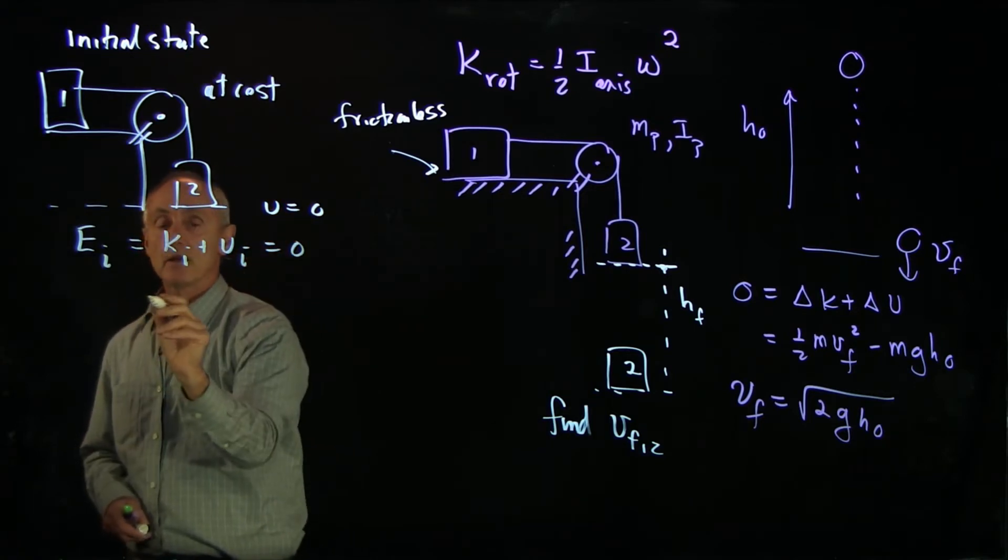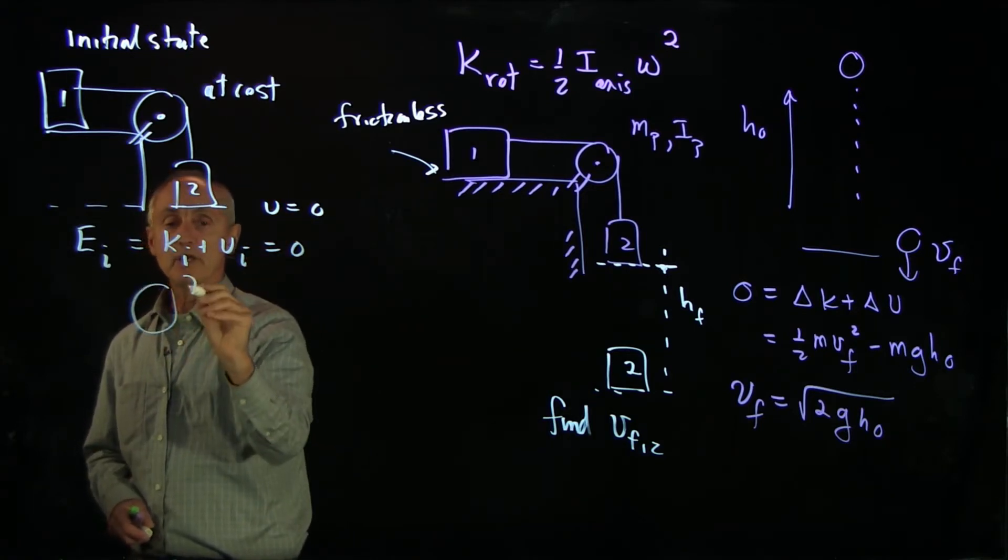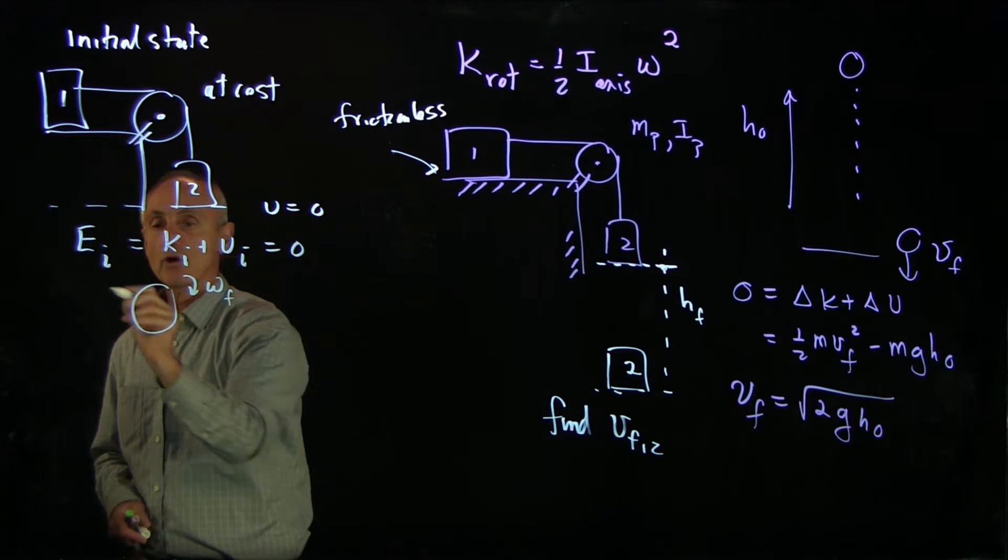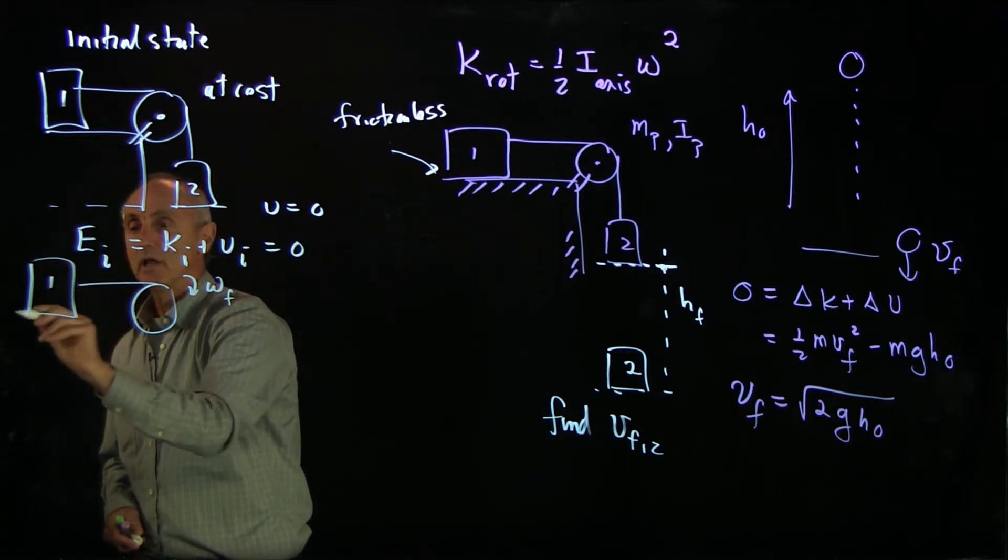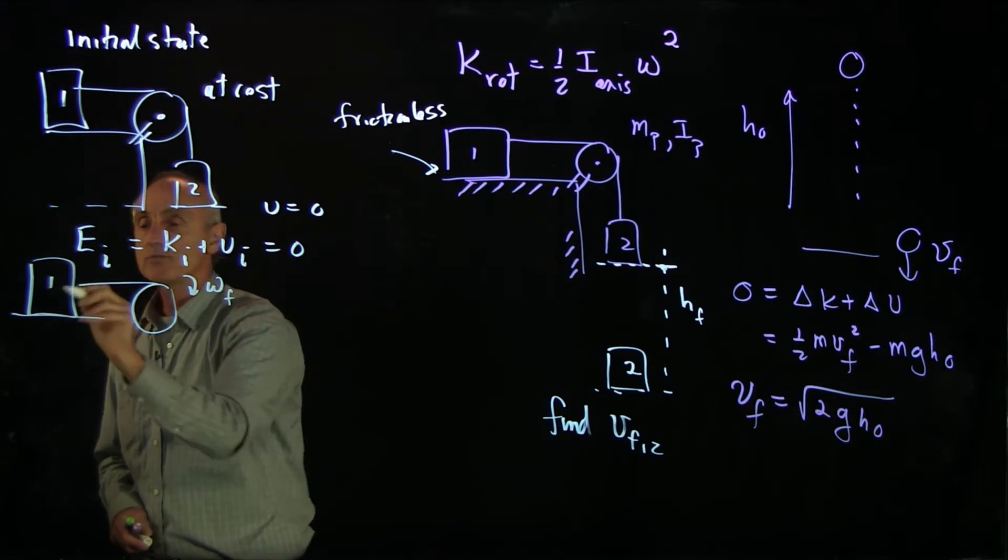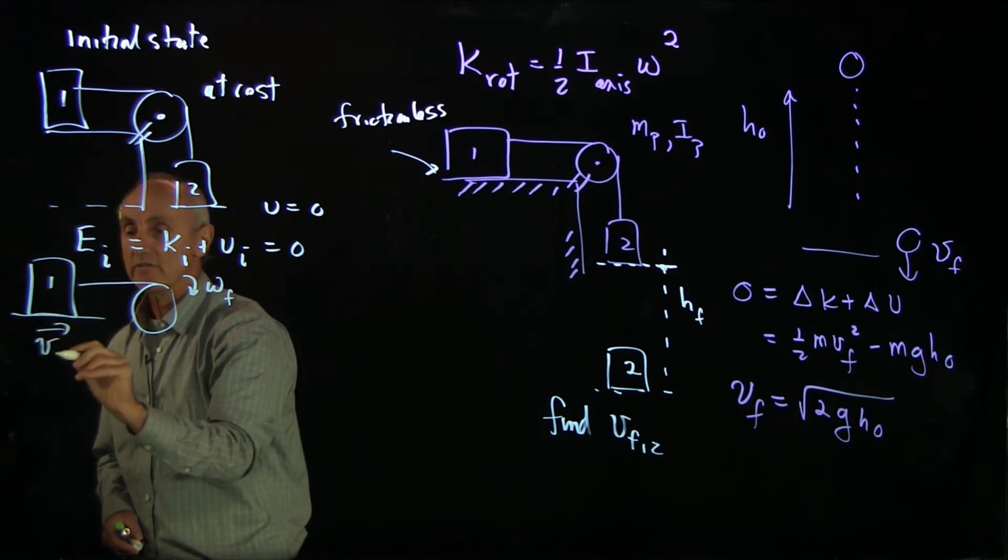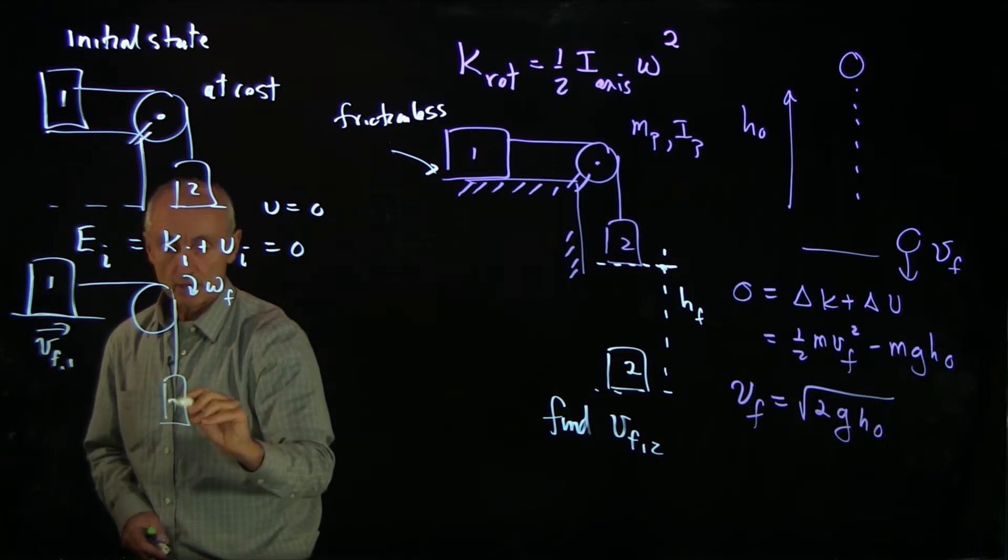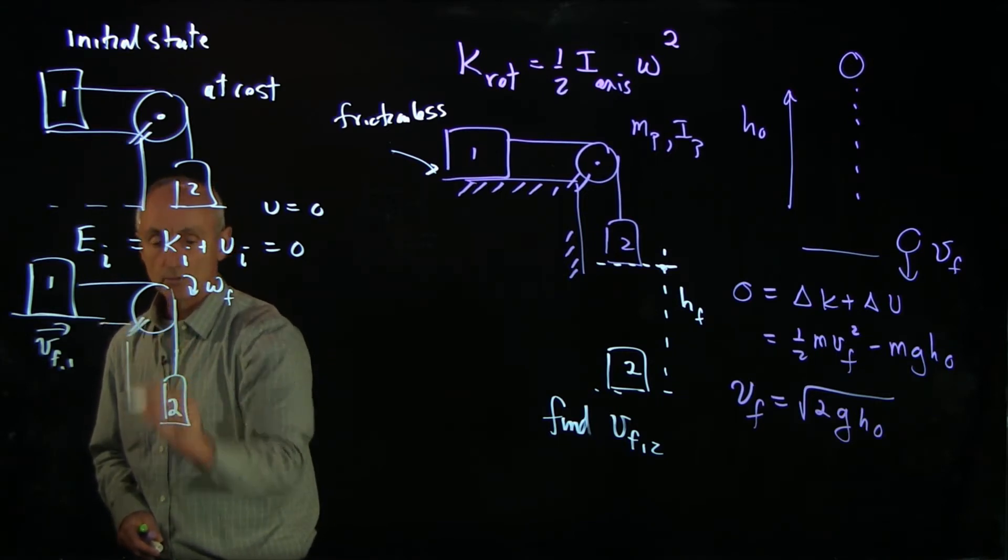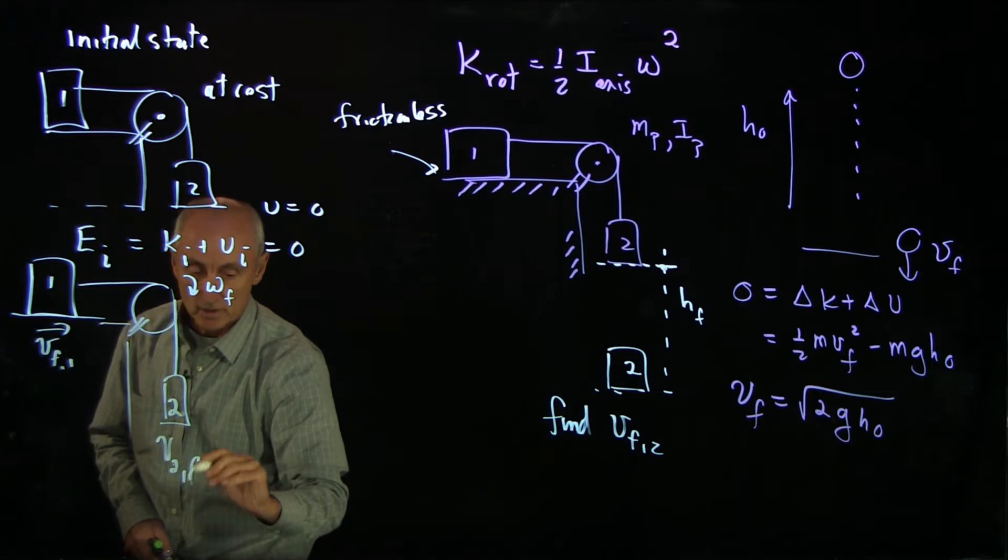In our final state, we have the pulley is rotating with omega final. Block 1 is moving with the velocity v final 1, and block 2 is also moving with v 2 final.